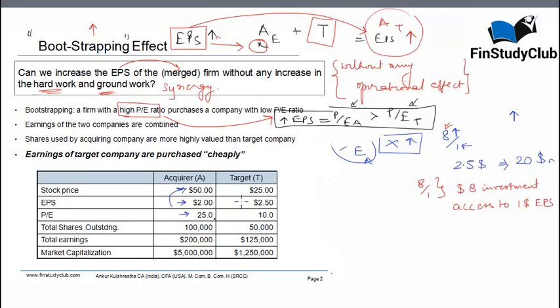There is another company called T with $2.5 earnings per share. It's a higher earning compared to the acquirer, but it's not a favorite among the investor community. Therefore, the stock price is trading just at 25. There is a size difference between the firms, 100,000 shares compared to 50,000, and accordingly the total earnings and total market cap is 5 million and 1.25 million.